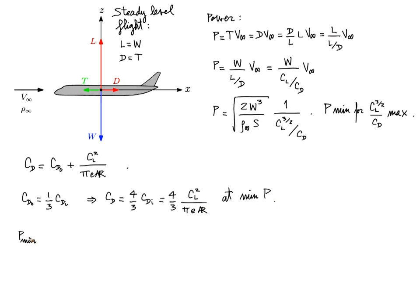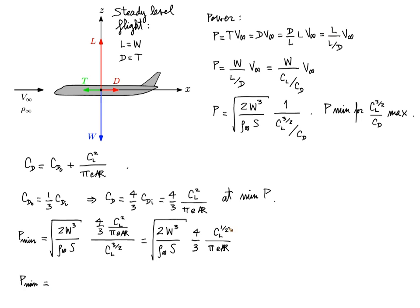So we can write that the minimum power is equal to that same part under the square root. I replace CD by my newly found expression and simplify.